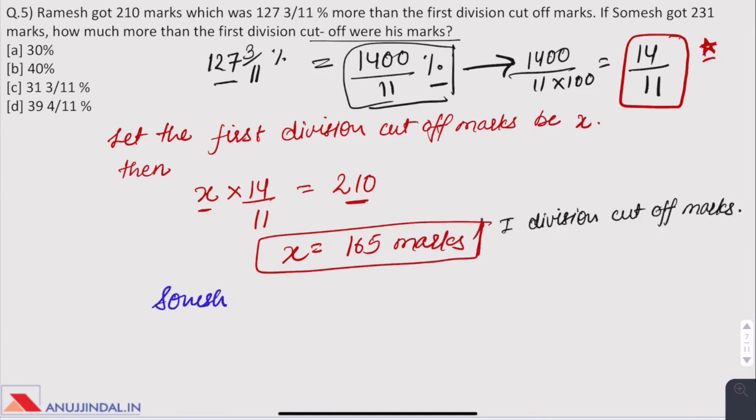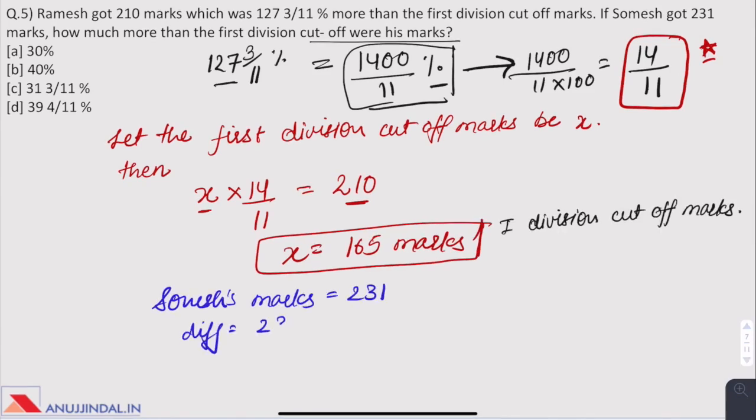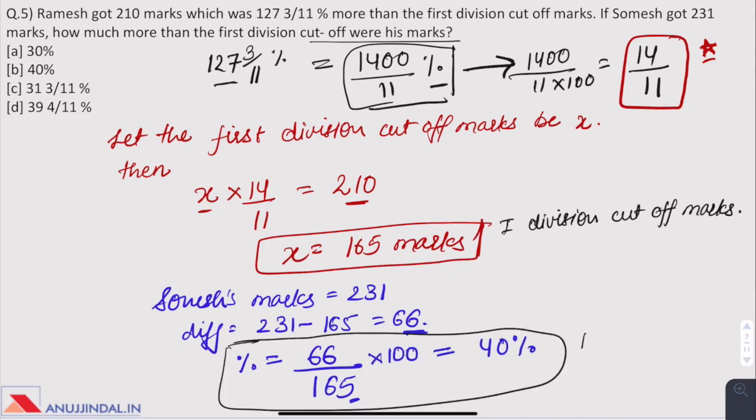Now Somesh got 231 marks. So the difference is 231 minus 165 which is 66 marks. To find the percentage, write the difference, divide it by 165, first division cutoff marks, and multiply by 100 and we get 40%. So answer is B, 40%.